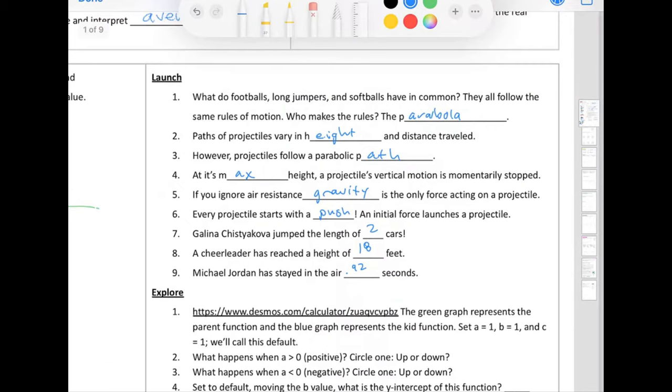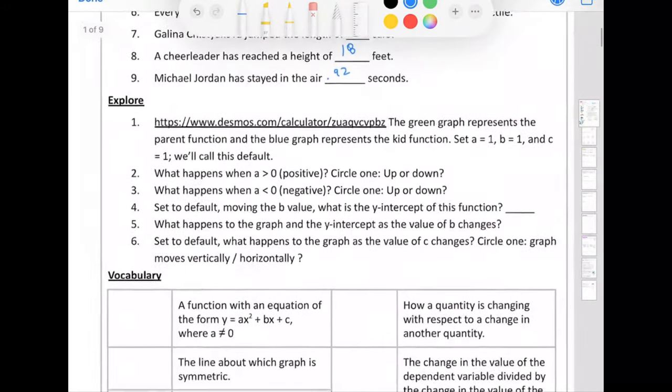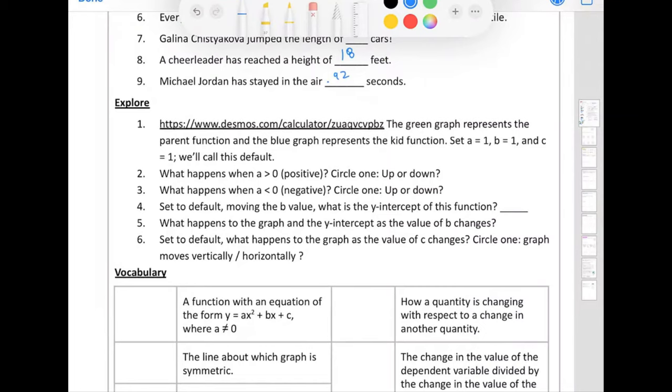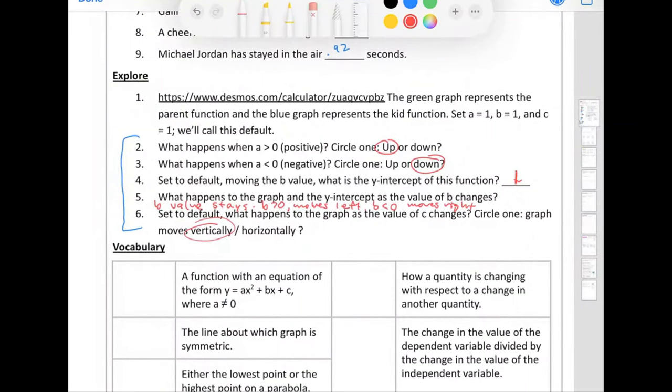So if we set it back to the default, it says for number seven, what happens to the graph as the value of C changes? So if I go positive, it goes where? Up. And if it's negative, it's going down. So is the, did the graph go vertically up and down or horizontally left and right? It went vertically. All right, let's go over these are the answers for the launch. Let's go under explore. Now go ahead and click on that. And you have this Desmos, kind of graph. The green graph represents the parent function. And the blue graph represents the kid function, right? If you took out a picture of my kids, they look like me. Some people call these mother. And when you click on that, it says set a equals zero, a equals one, b equals one, c equals one. We're going to call this the default. So anytime I said, reset it to these default, a, b, and c are both one.